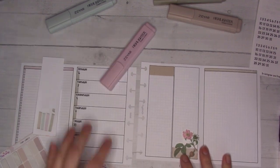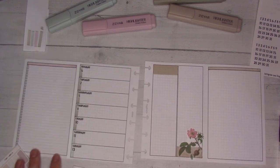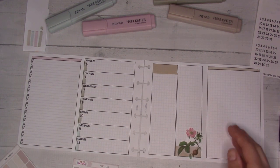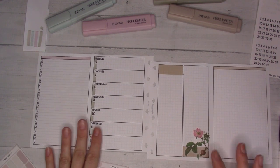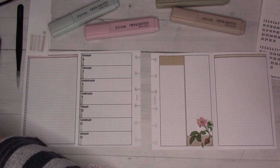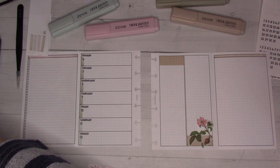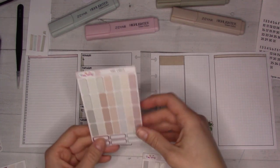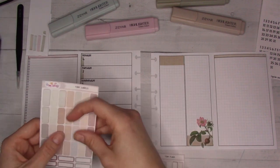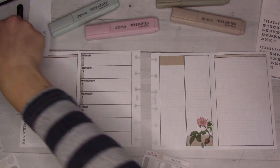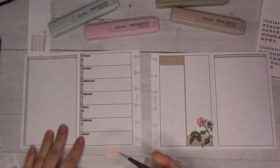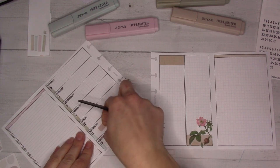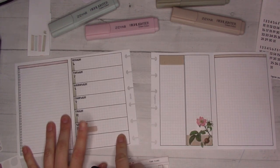This will be like for some dailies, and then this is general note taking, but I can also do dailies over here if I run out of space in these columns. Now let's start adding events. My monthly shows me we've got a birthday party on Saturday, so let's go ahead and put that in. I'll probably do a dinner column here.